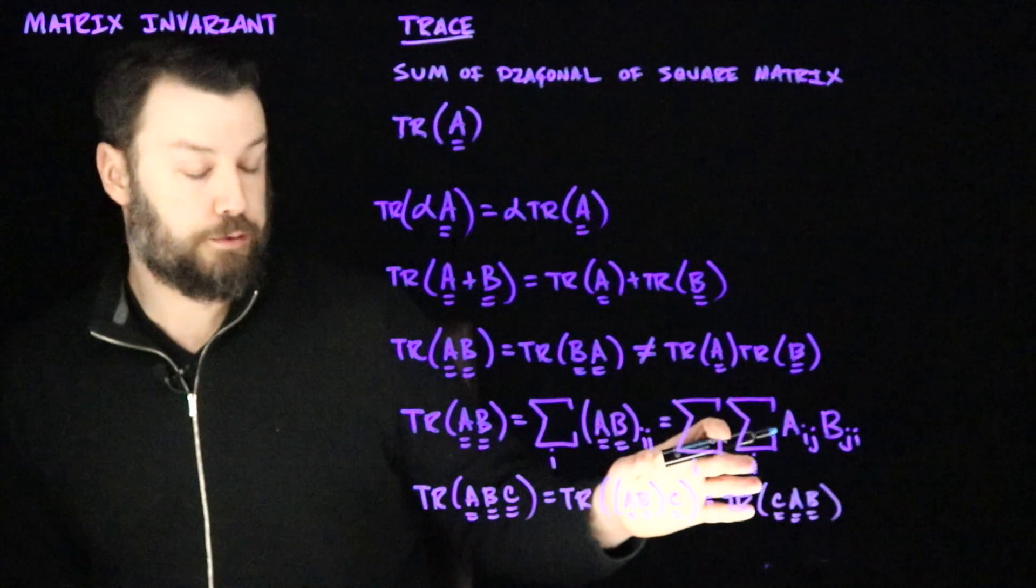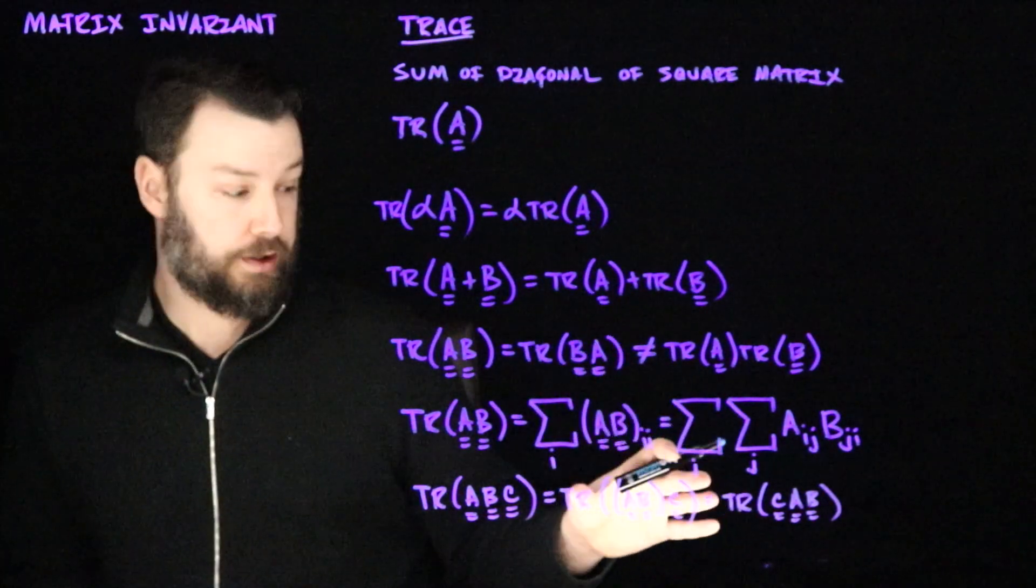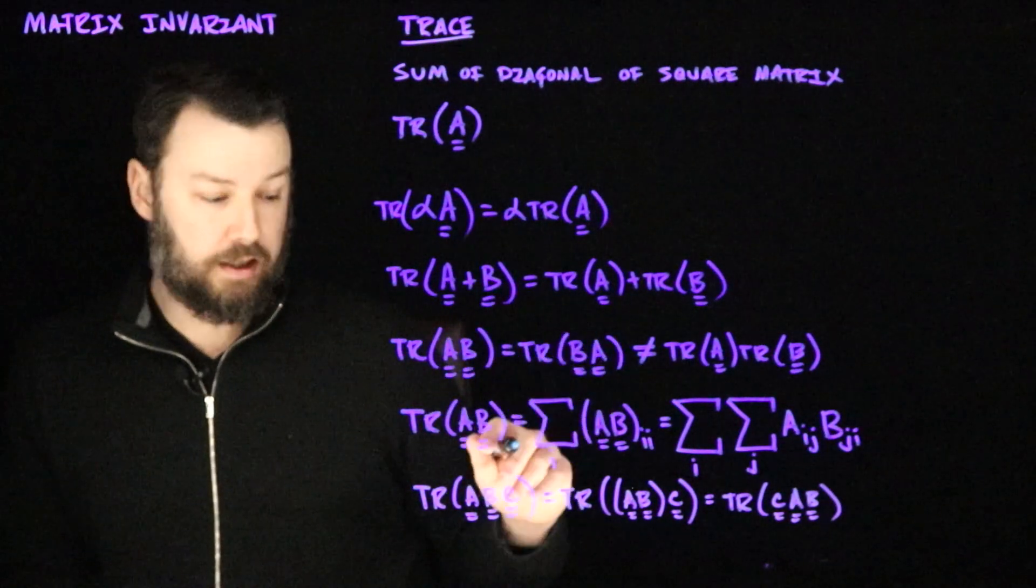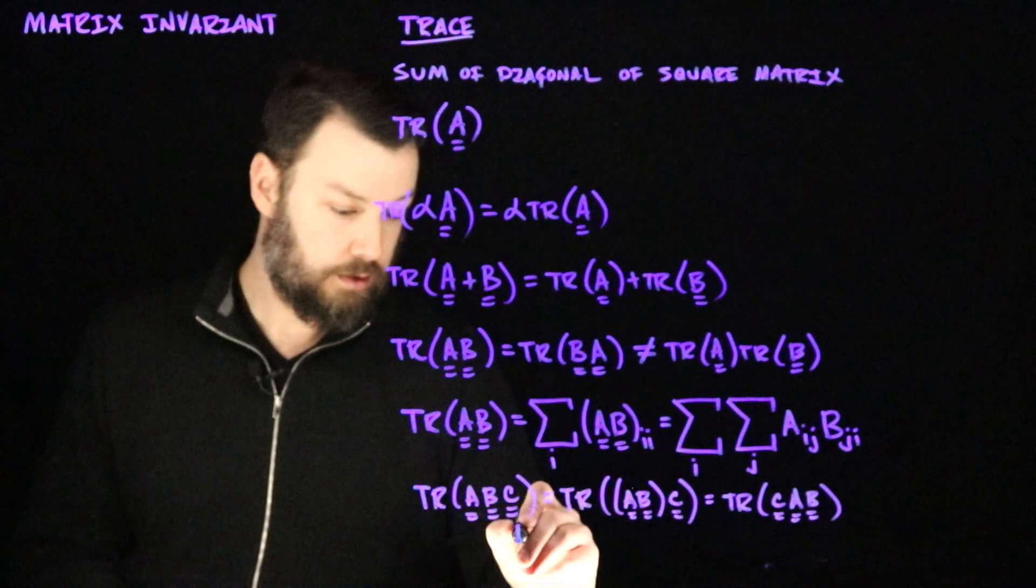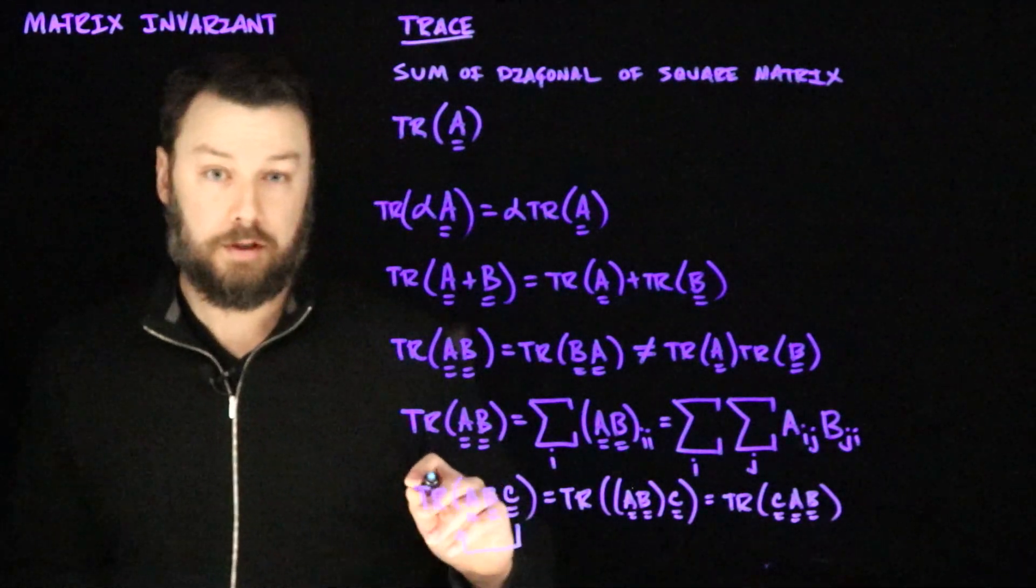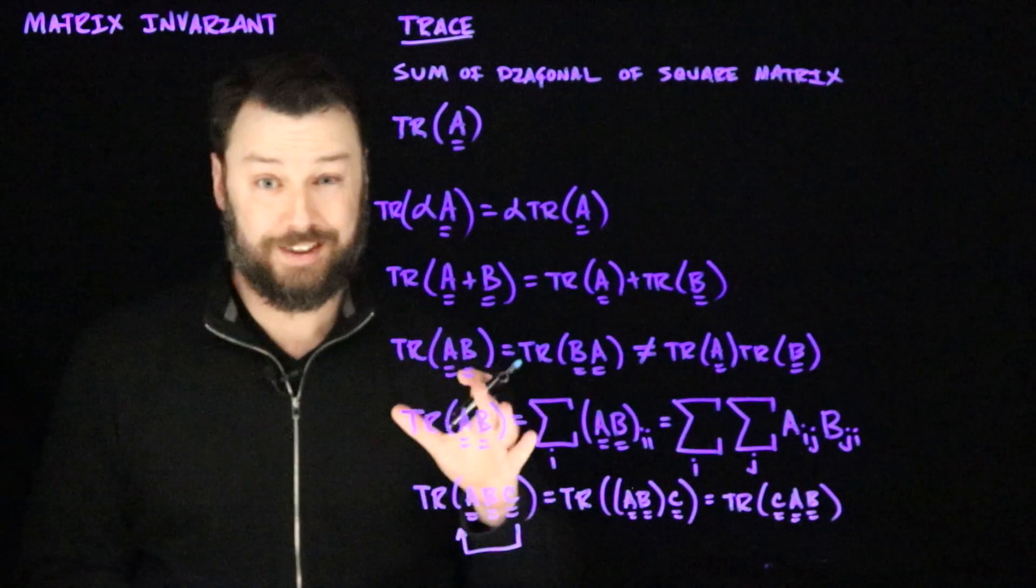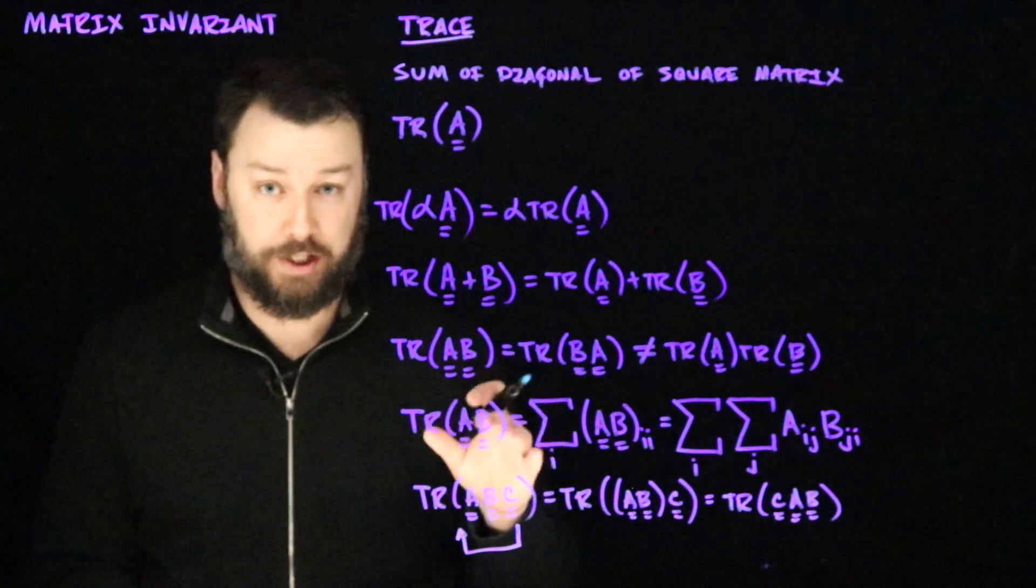So this is what we refer to sometimes as the cyclic property of trace, which is that as long as the ordering is preserved and the dimensions are compatible, we can take the front and move it to the back and that preserves the value of the trace.